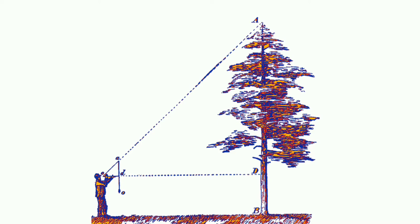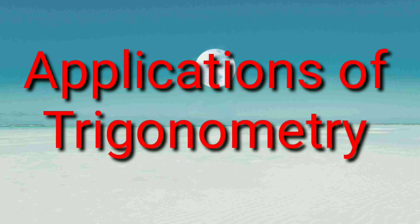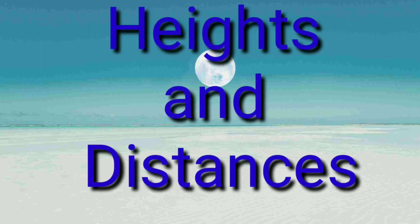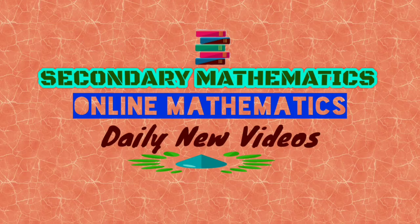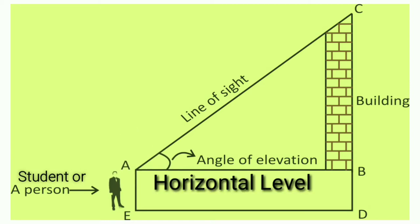Our chapter is on applications of trigonometry. When we talk about its application we have to know about heights and distances. Let us clear some concepts before going to the exercise. Here we have a figure — let us draw a line AC from the eye of the student to the top of the figure. The angle BAC formed by the line of sight with the horizontal is called the angle of elevation. The angle of elevation of the point viewed is the angle formed by the line of sight with the horizontal when the point being viewed is above the horizontal level.